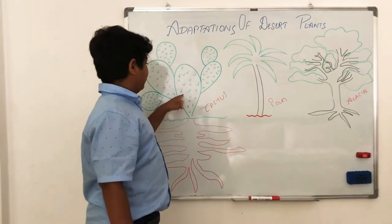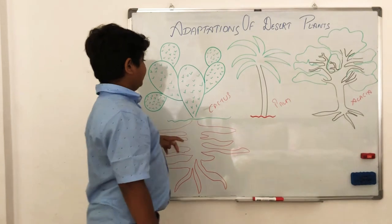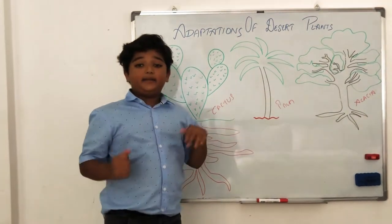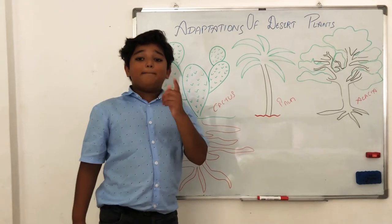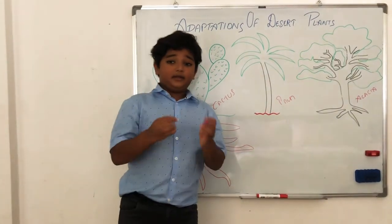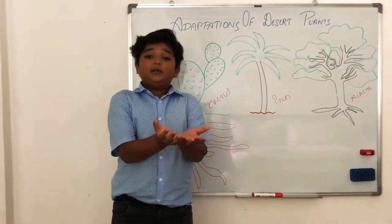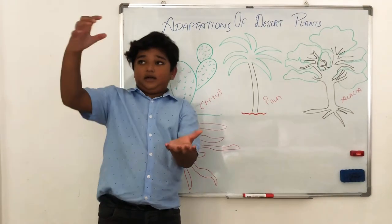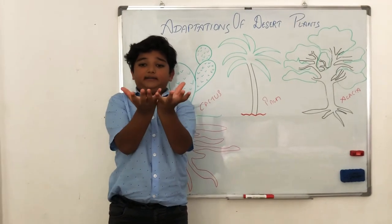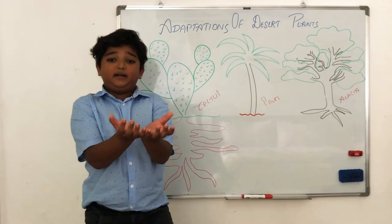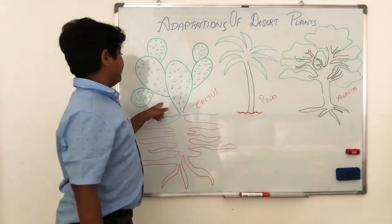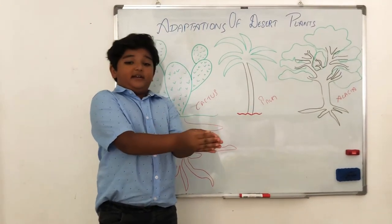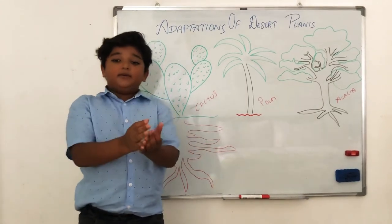The third fact about a cactus is that it has very pointy leaves. Do you know why? Because in normal plants, the leaves are spread out, so the hot sun evaporates water through the stomata in those leaves. But in a cactus, the leaves are pointy and the stomata are closed, so water does not evaporate from the sun.